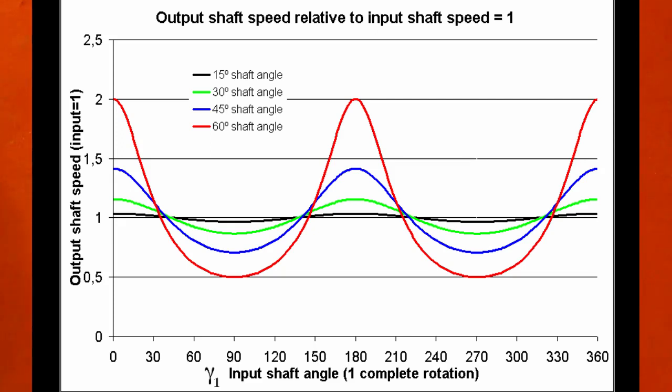In this plot we can see that, for example, for an angle between shafts of 60 degrees, the speed of the output shaft can vary between half and double the speed of the input shaft for each revolution.